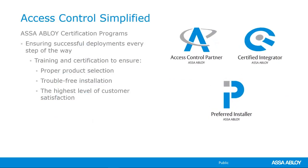Our access control partners write the integrations, and anytime you have programming or software questions, these are the team members you go to. They're also able to sell our product to our certified integrators. Our certified integrators are currently the people who might be installing your access control system now — if you have mag locks, electric strikes, or any kind of electrified hardware. They also might be installing your fire alarms or burglar alarms, or pulling some of your data cables for your facility. And then finally, we have the preferred installer program — certified locksmiths that go through training on how to properly install our lock sets. Be assured, if somebody tells you they're an Assa Abloy partner, they've gone through hours of training and testing and been approved by the local teams.